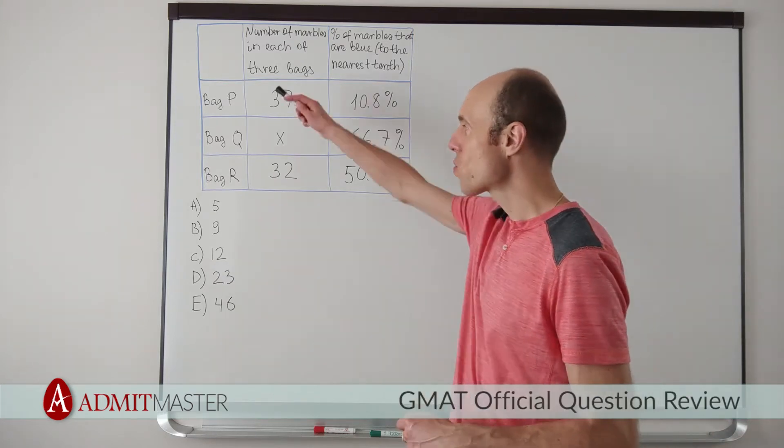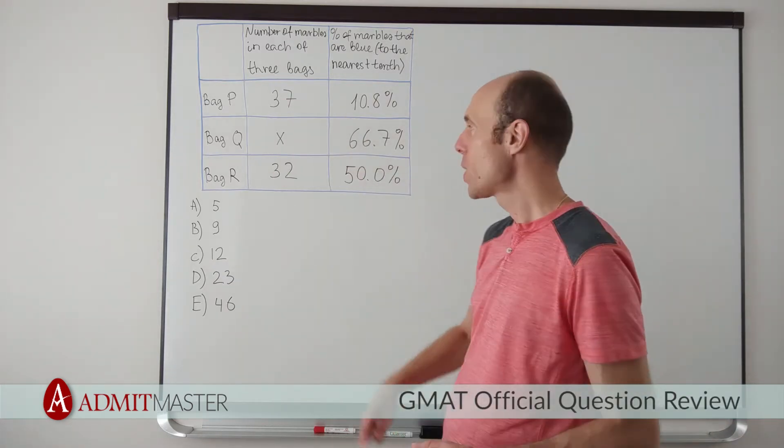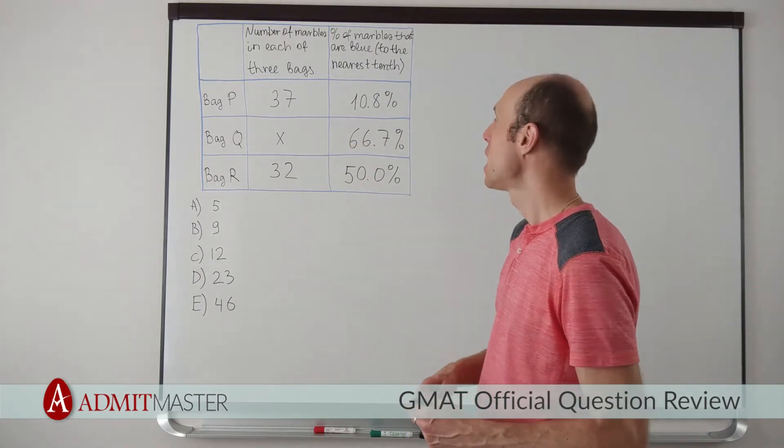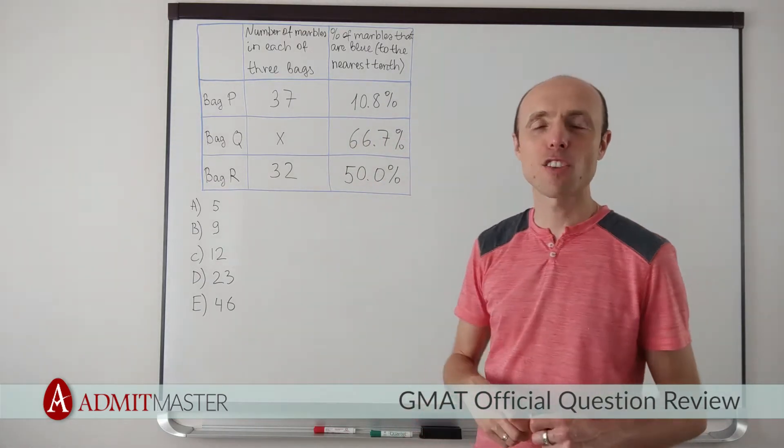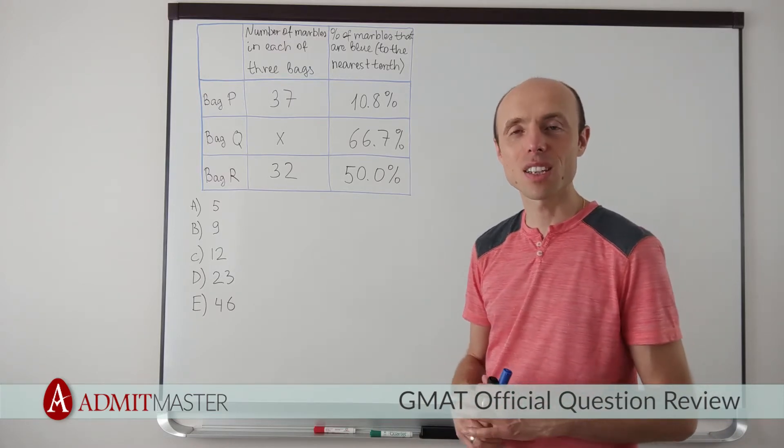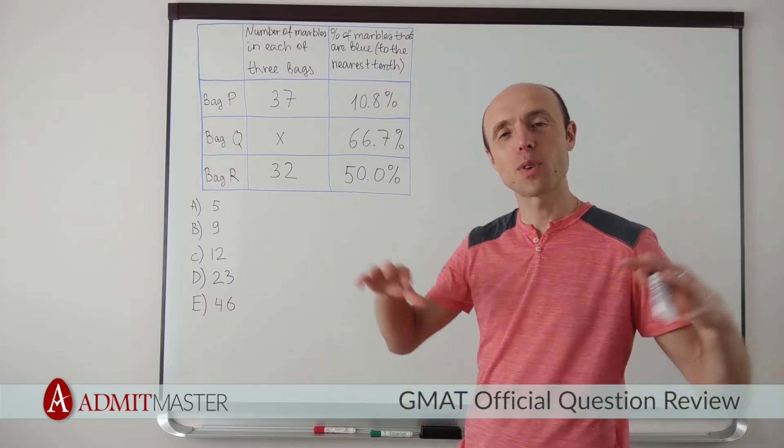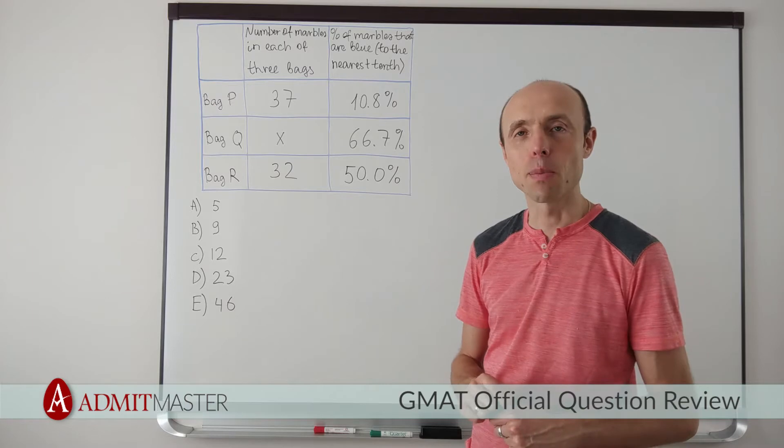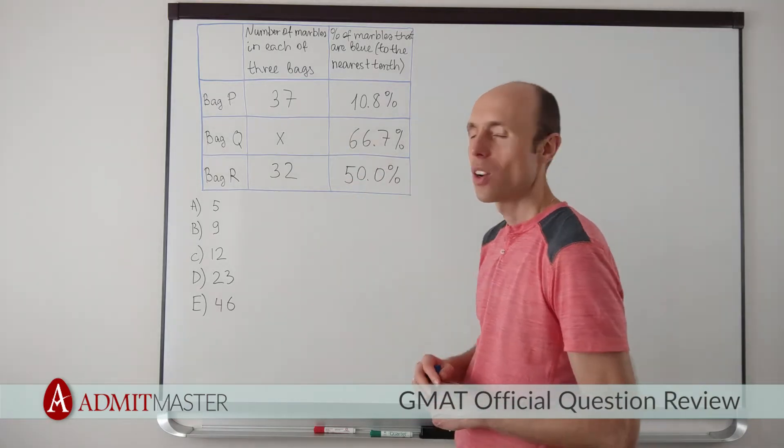In this question, we're given three bags, P, Q, and R. We know how many marbles are there in each bag. We also know what percentage of marbles in each bag are blue. We're also told that a third of all the marbles, if we put all of these marbles from all three bags together, is going to be blue. And the question is, what is x?